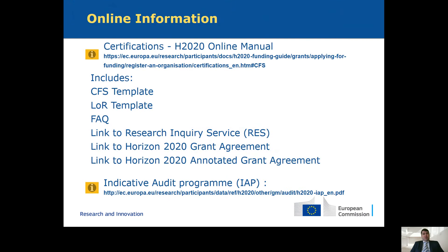The most important link for you is the one where you can find the online manual for the certifications. On this website you find the template for the CFS, the template for the letter of representation for the CFS, the frequently asked questions, and if you still have further questions you can raise them to the research inquiry service. You'll also find links to the grant agreement and to the annotated grant agreement for Horizon 2020, which is an award-winning document explaining very clearly all the requirements with examples and exceptions.